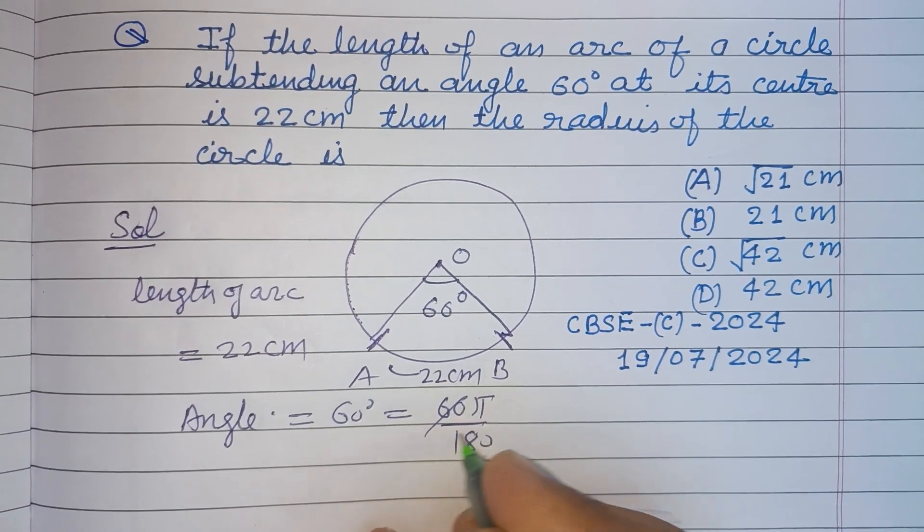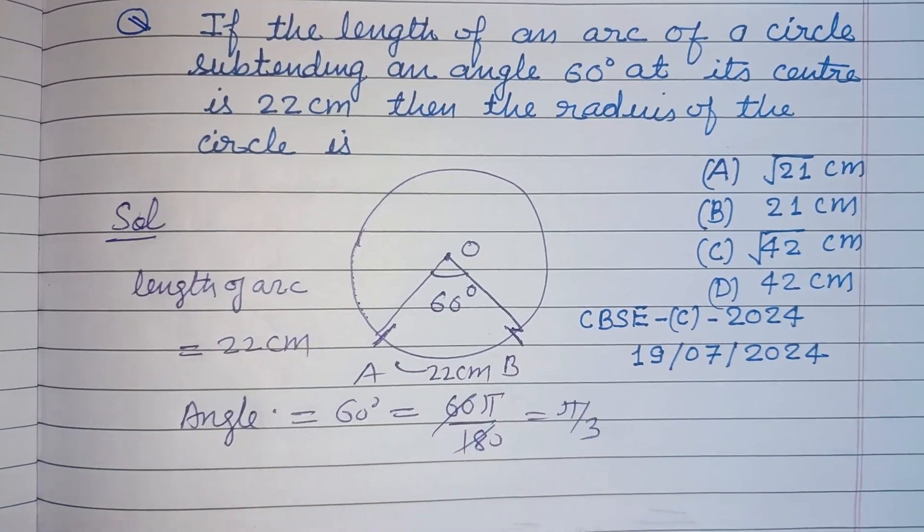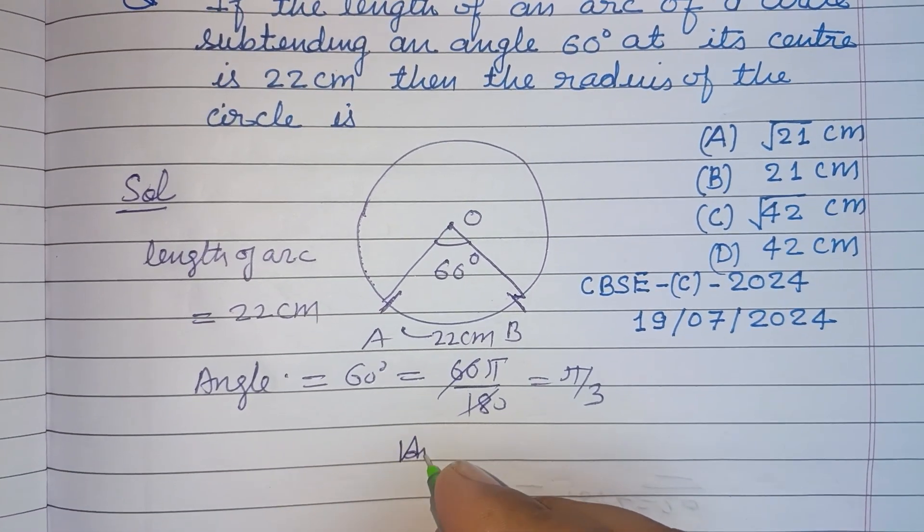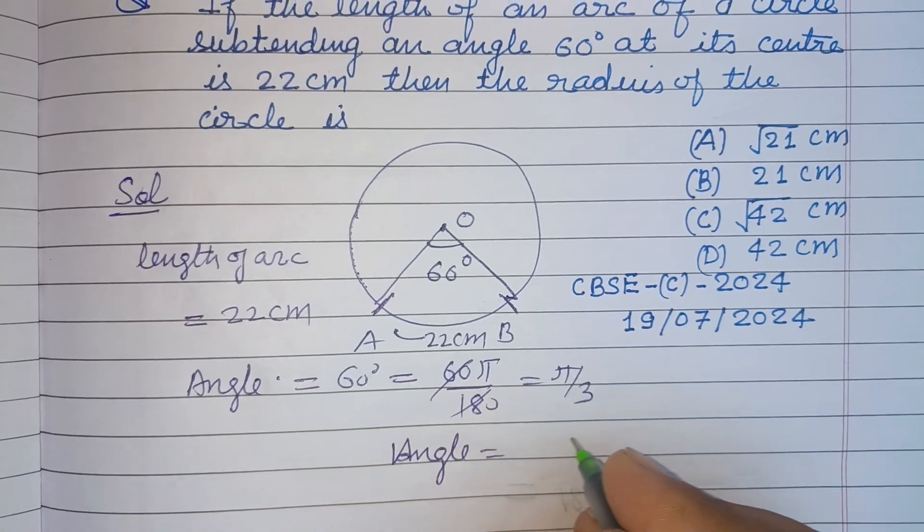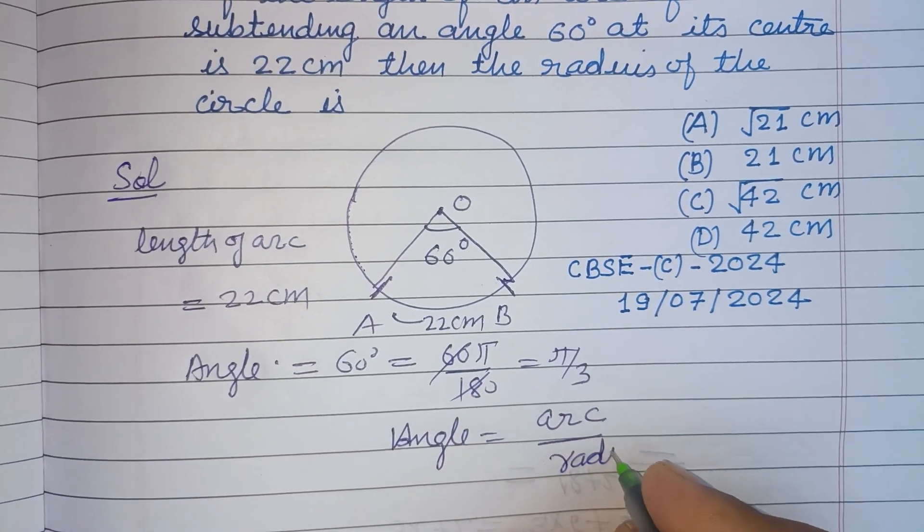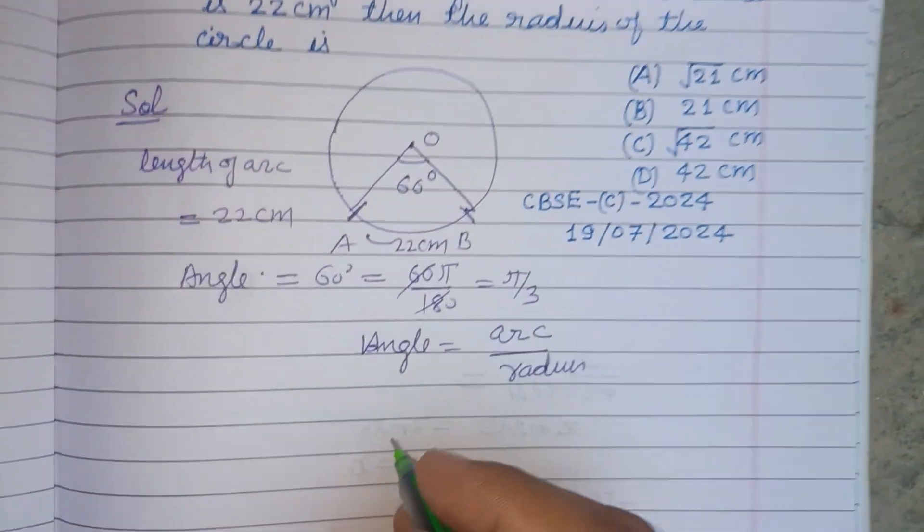So you know that angle equals arc over radius. So here radius is required, so radius equals arc over angle.